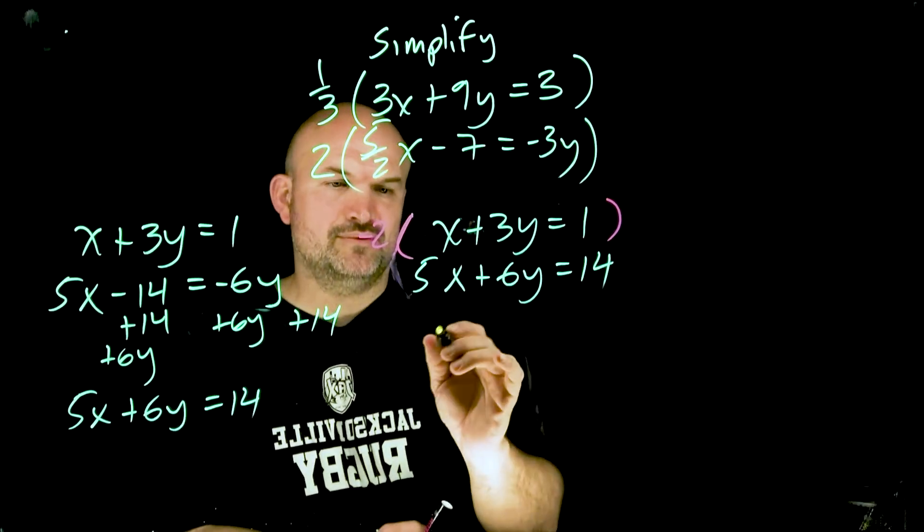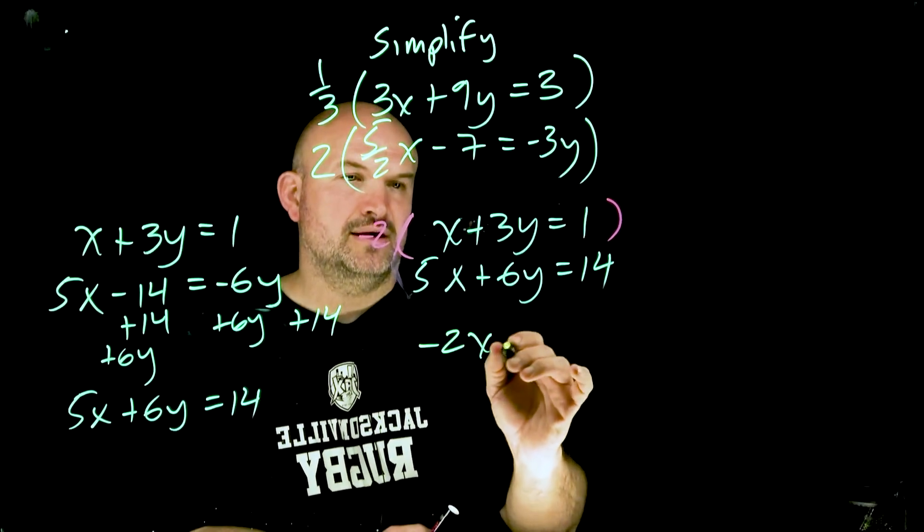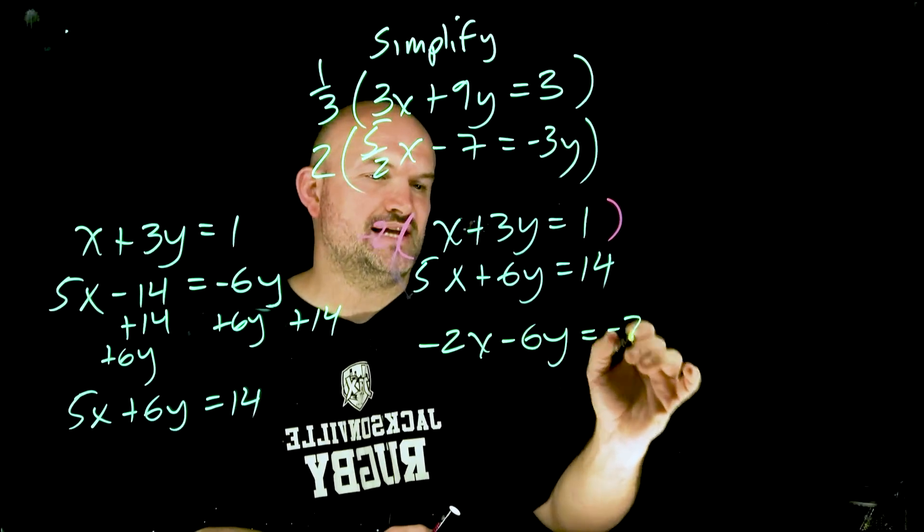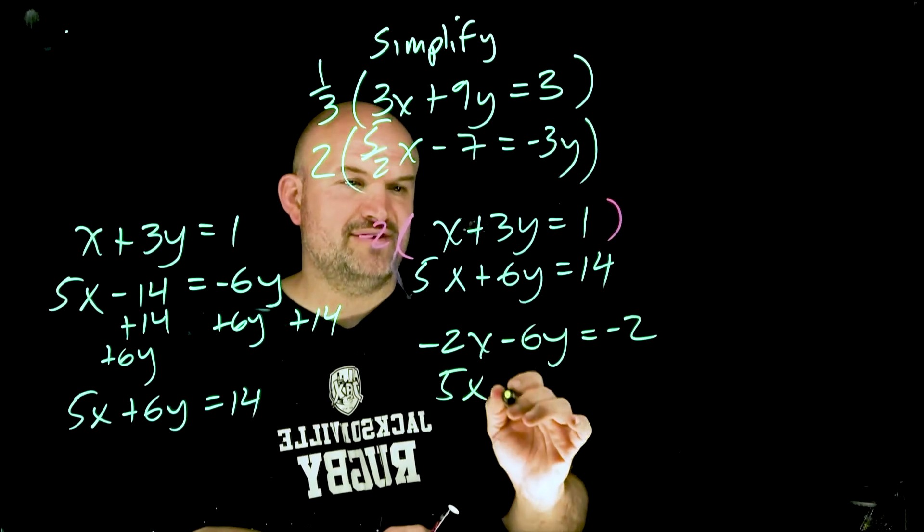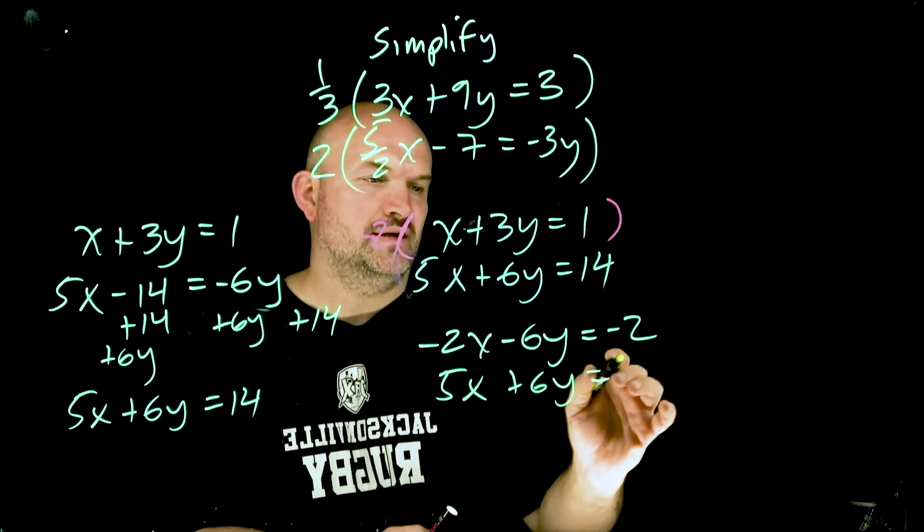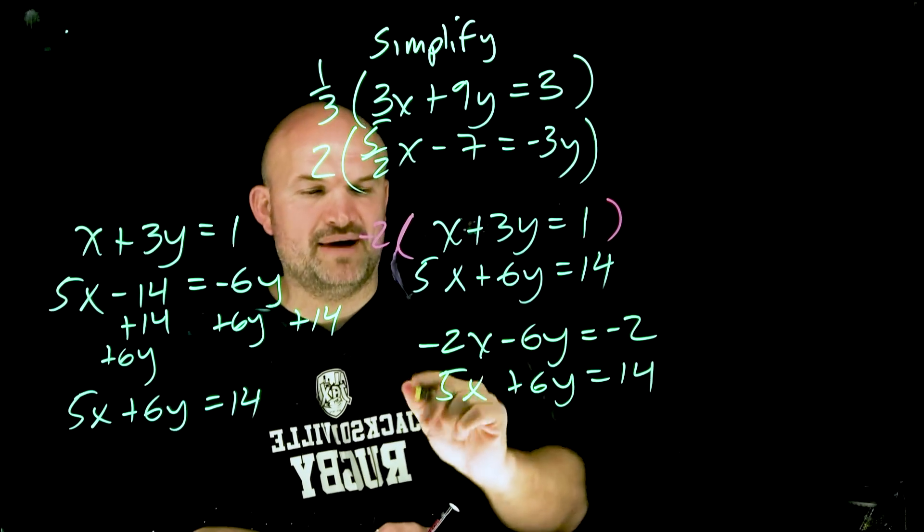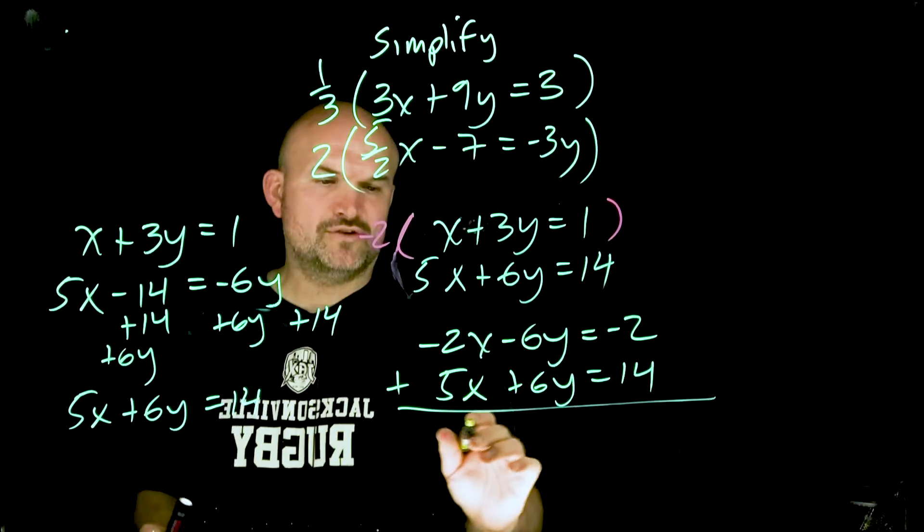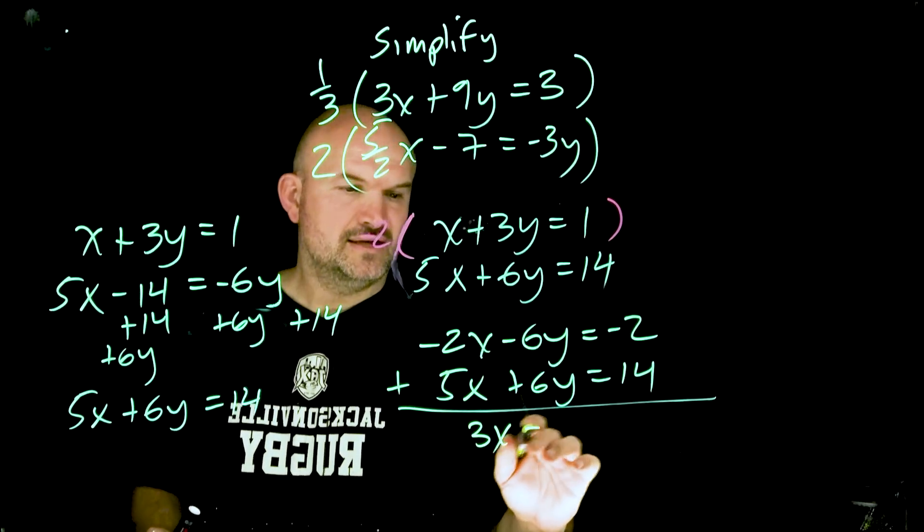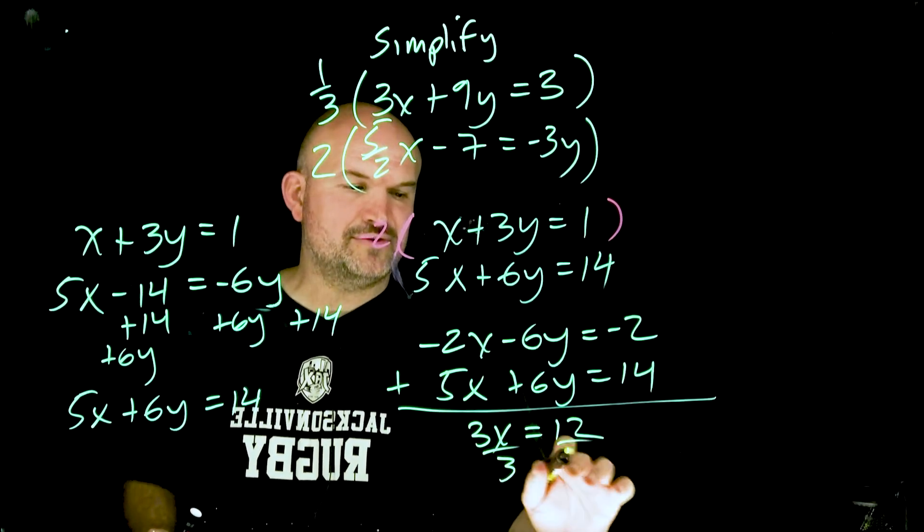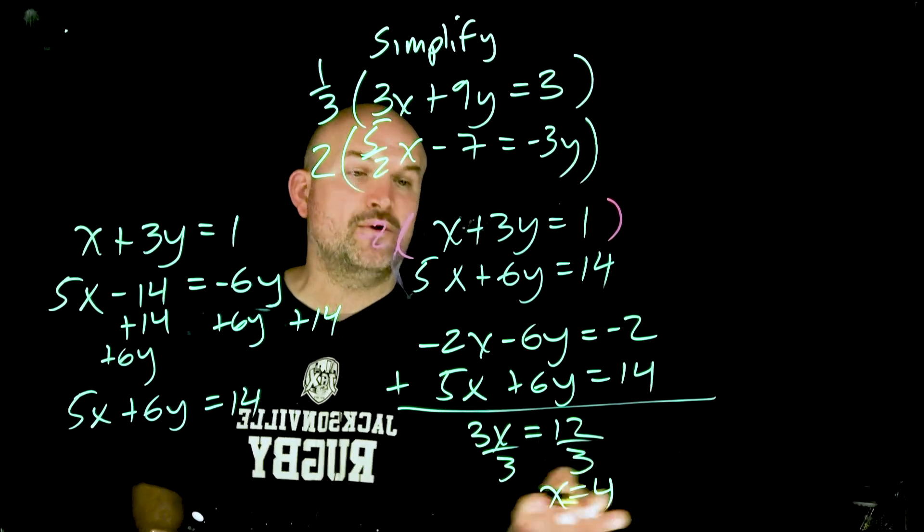So when multiplying this all the way through, I'm now going to have -2x - 6y = -2. And over here, I have 5x + 6y = 14. Again, same exact coefficient, one negative, one positive. I can just go ahead and add them over here. That's going to give me 3x = 12, divide by 3, divide by 3, x = 4.